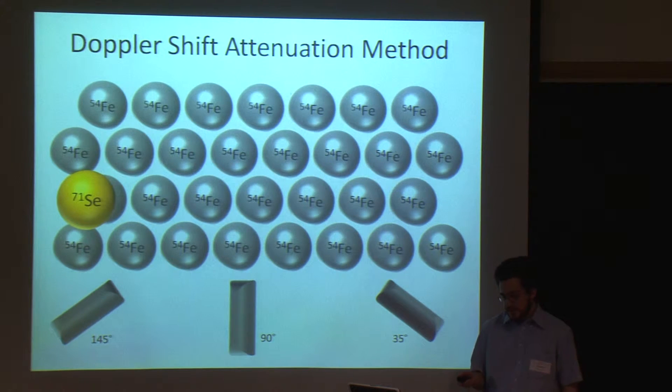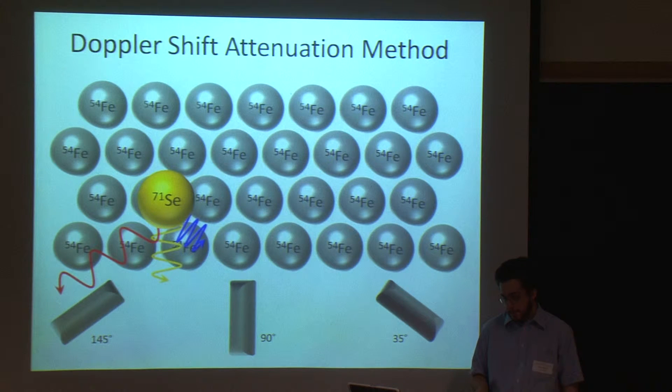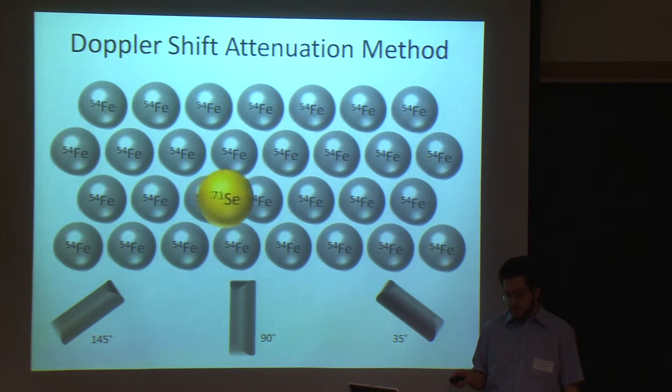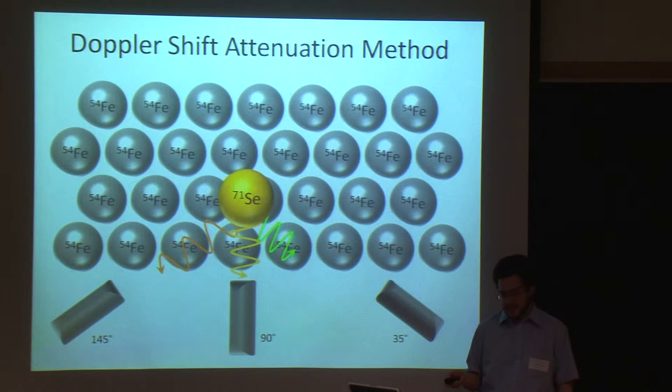So, if the nucleus decays quickly, it is still moving quickly, and this rear gamma ray detector will read a strong red shift and a lower gamma ray energy. And this will be different if the nucleus is moving more slowly or is nearly stopped.